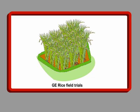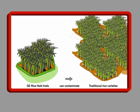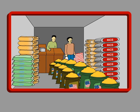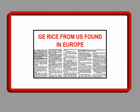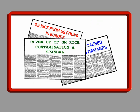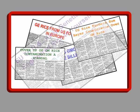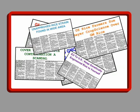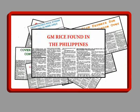GE crops will also contaminate precious local crop varieties, destroying them forever. This process is irreversible. This happened in Mexico, which is the centre of biodiversity of corn. GE rice field trials are thus very dangerous. In 2006 and 2007, unapproved Liberty Link rice from the US — only ever grown in trial plots — contaminated seed stocks and rice fields in the US and rice supplies to different parts of the world. Some companies banned rice imports from the US and American farmers lost millions of dollars due to this contamination.